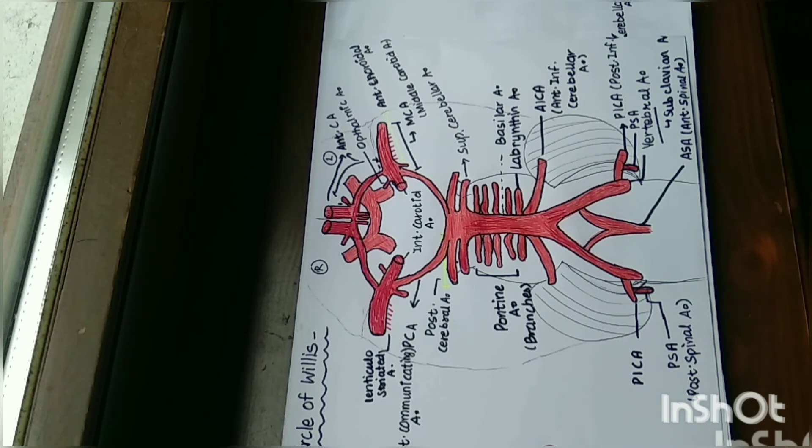The Circle of Willis is floating in the cerebrospinal fluid. That's why if some vessel is ruptured in the subarachnoid space, it causes subarachnoid hemorrhage.